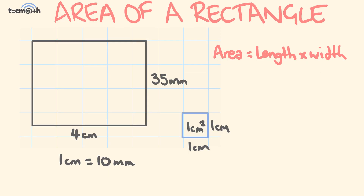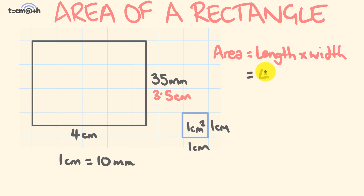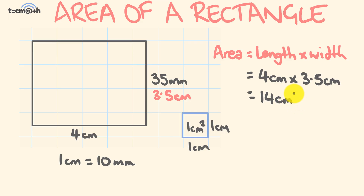Here's the final example — give it a go. We have a rectangle with a length of four centimeters and a width of 35 millimeters. First, convert the millimeters to centimeters: there are 10 millimeters in a centimeter, so 35 millimeters equals 3.5 centimeters. Now we can calculate: the area equals four centimeters multiplied by 3.5 centimeters, which equals 14 centimeters squared.